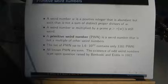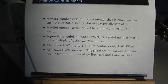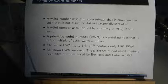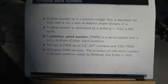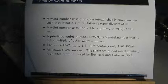Many curious facts about primitive weird numbers are known. For example, all known primitive weird numbers are even, and the existence of odd weird numbers is an open question raised by Benkoski and Erdős in 1972.